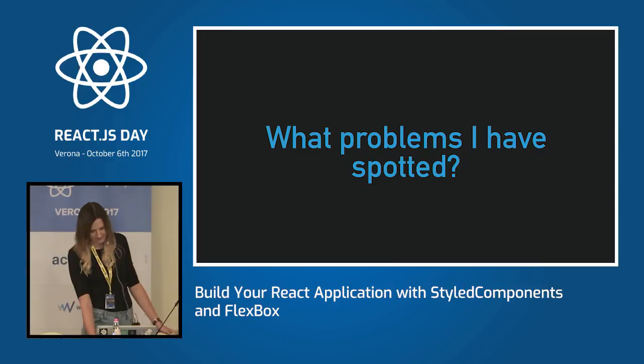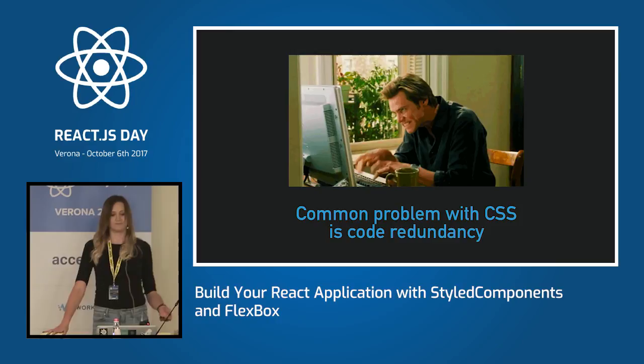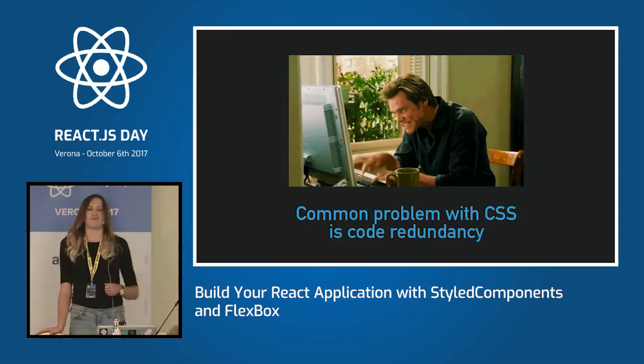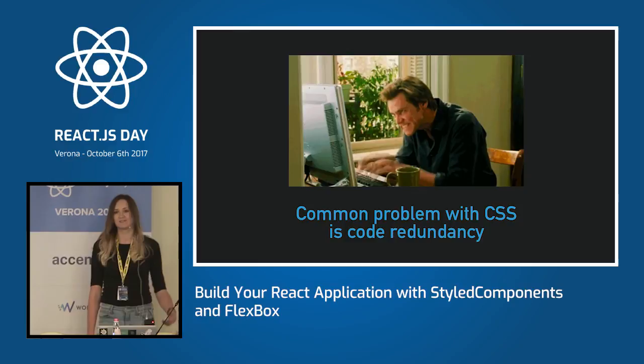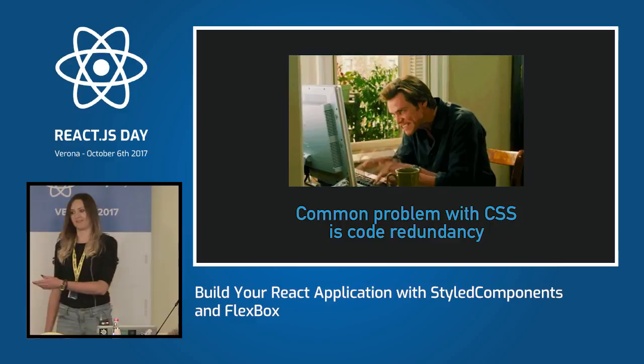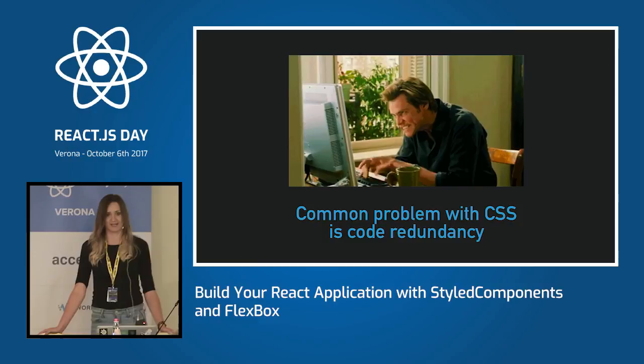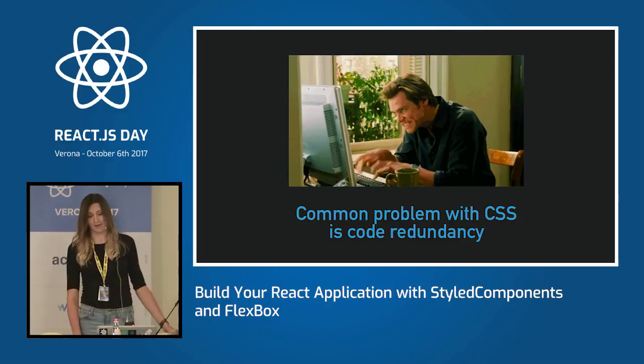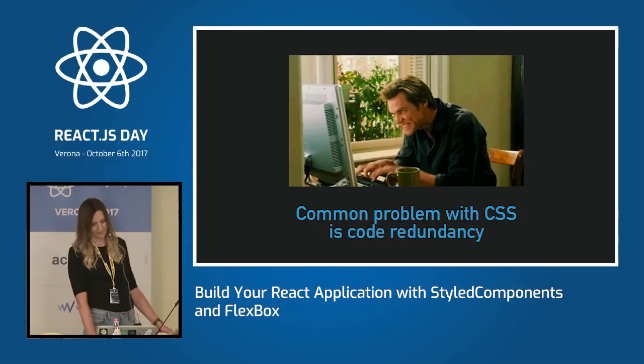Obviously, there are many problems. The common problem is, of course, redundancy. We just repeat ourselves so much in CSS, so many times. You write some styles for a button and then forget and write those styles once again in some nested, another section of our application. This is a huge problem because the CSS grows really fast. Another problem, of course, is overriding CSS.